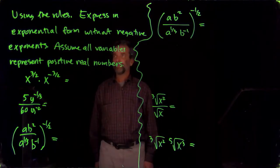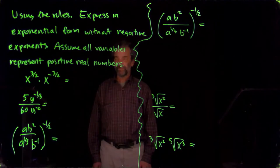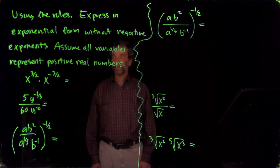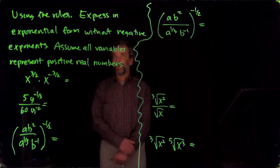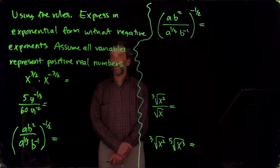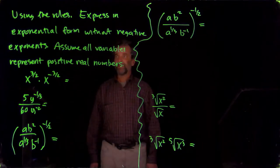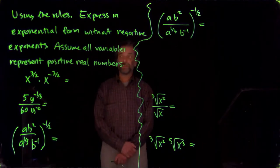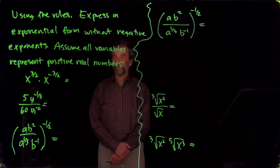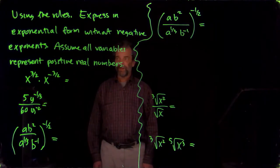Okay, so let's look at some examples of using the rules. We're going to convert each of the expressions given into exponential form without negative exponents. We're assuming all variables represent positive real numbers, so we just apply the exponent rules without worrying too much about it.